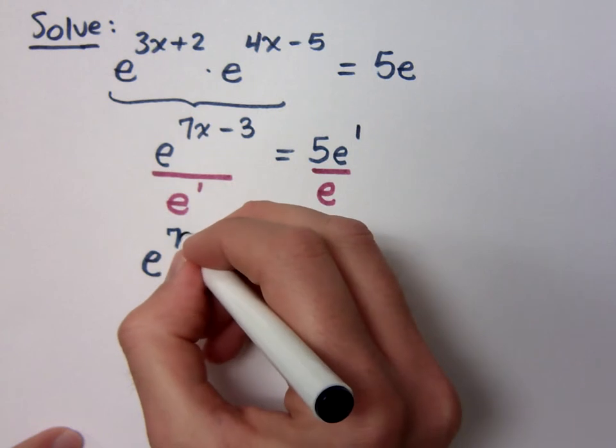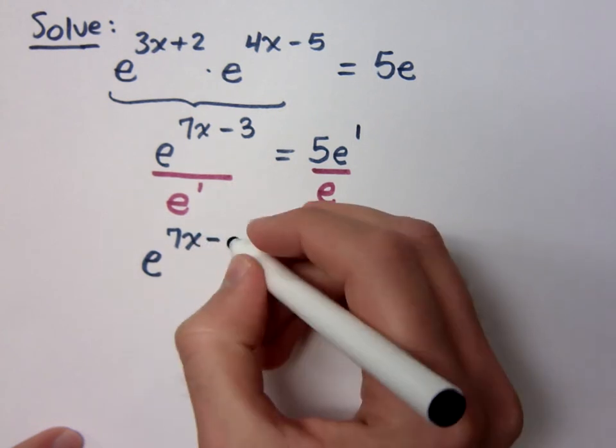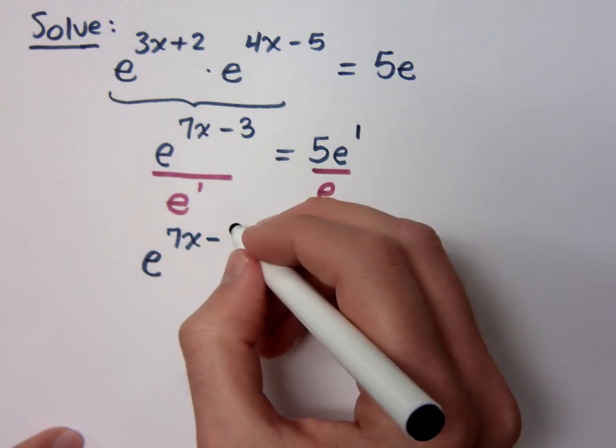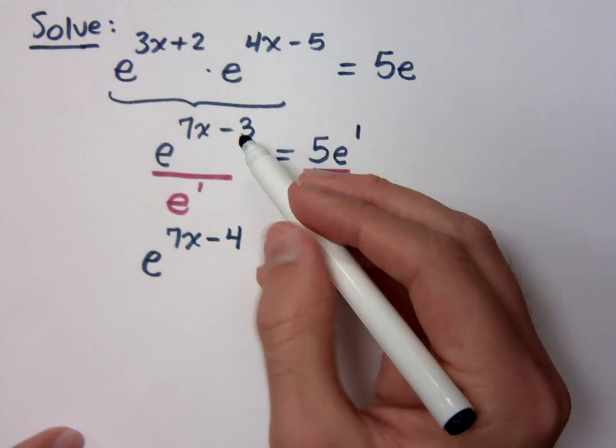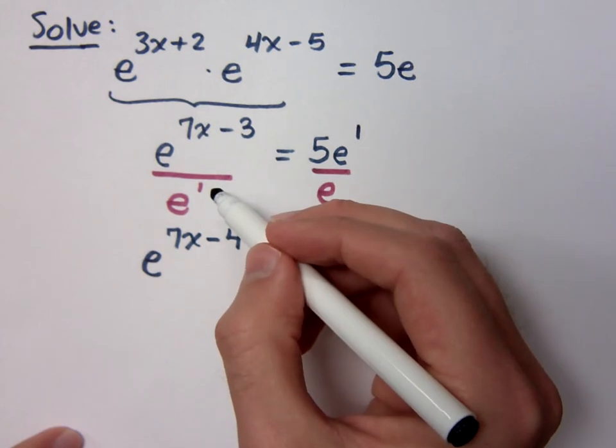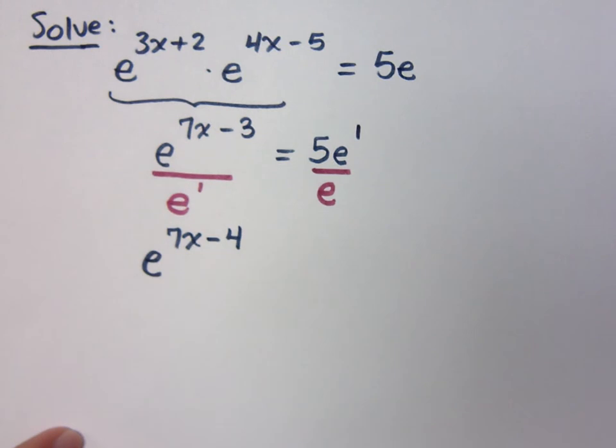e to the 7x minus 3, not minus 3 but minus 4. What do you do with exponents when you divide? You subtract. So I have to subtract 1 since I'm dividing by... Wait, so the e doesn't go away? No, it doesn't go away.